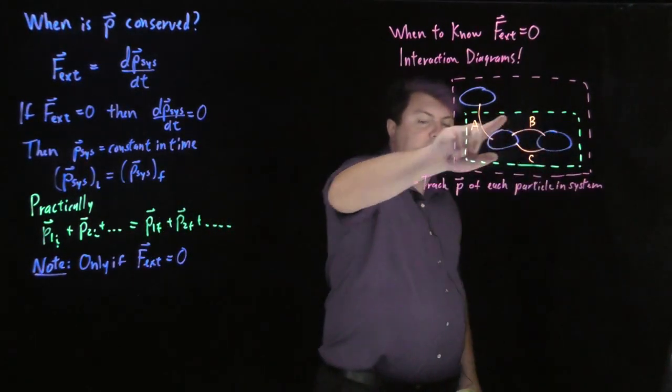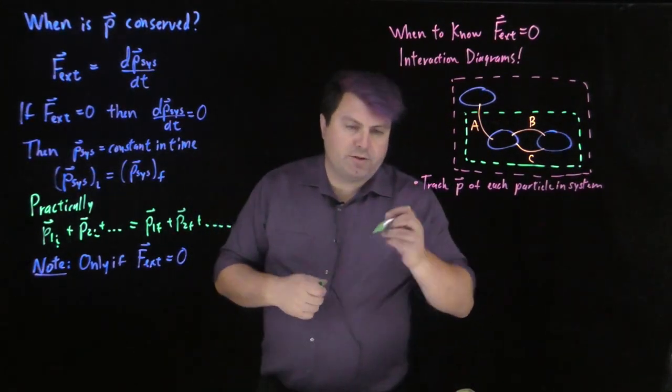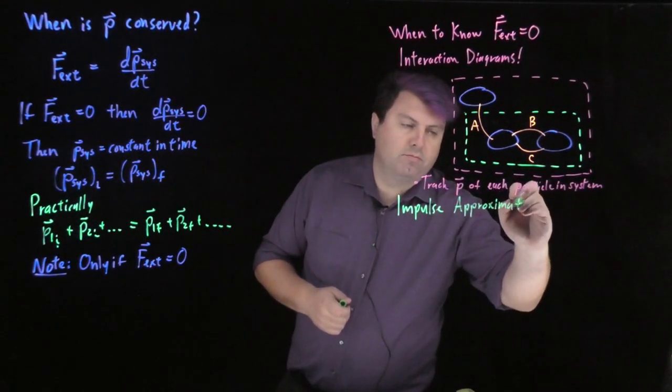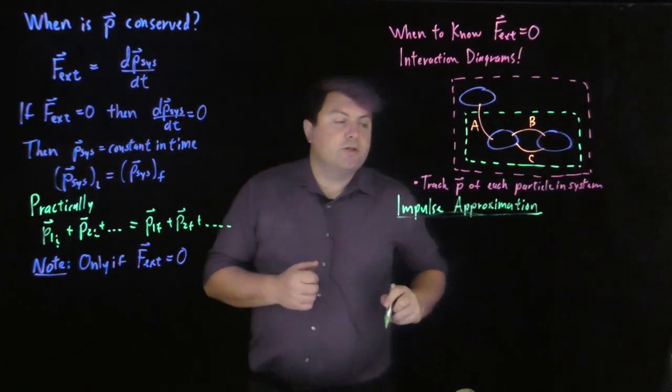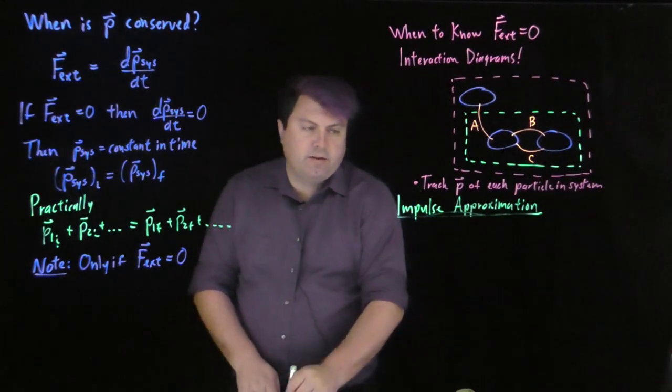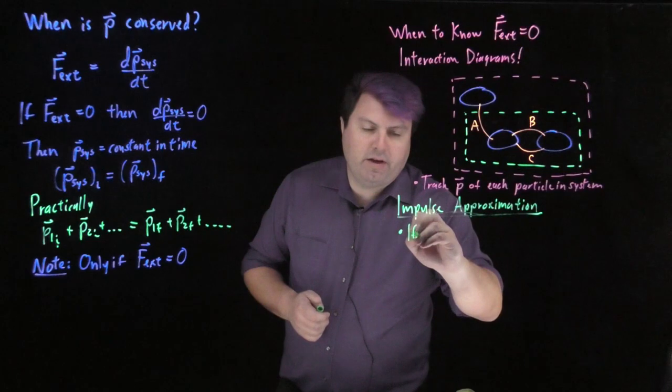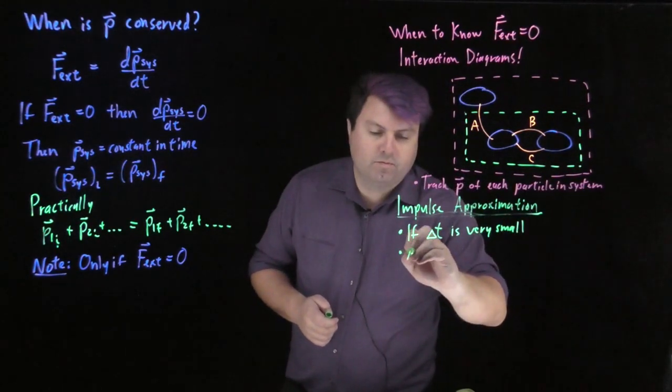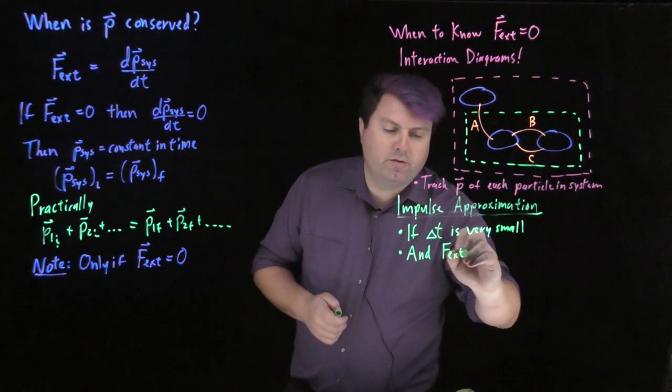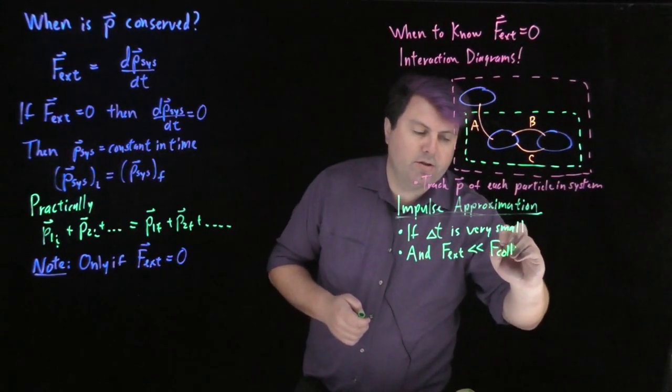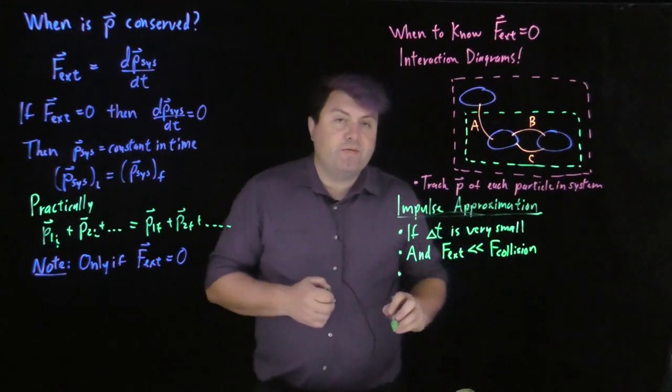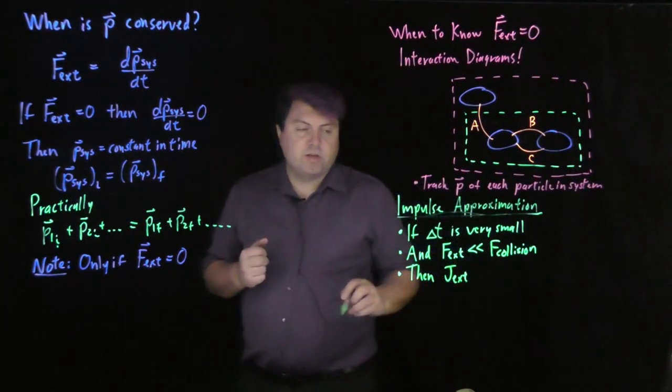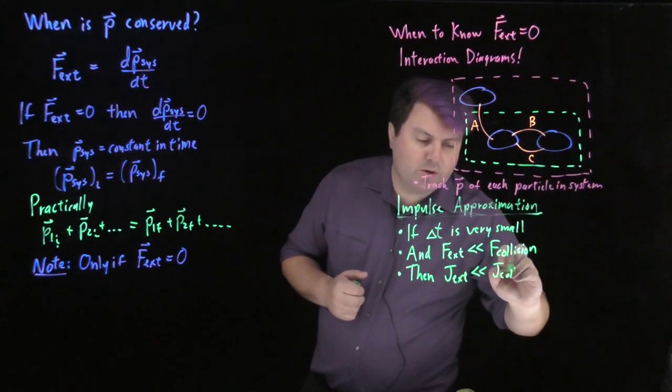So, in this case, it might be easier, and this is where we introduce the impulse approximation. So, for impulse approximation, we are asking for very specific cases. So, if our change in time is very small, and our external force is much, much smaller than the force of the collision. If this is the case for both, then the external impulse is going to be much, much less than the impulse from the collision.